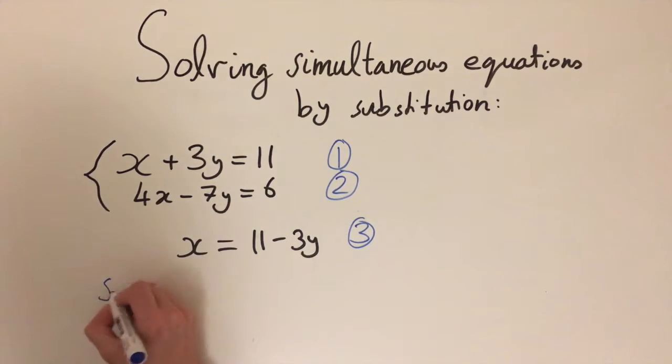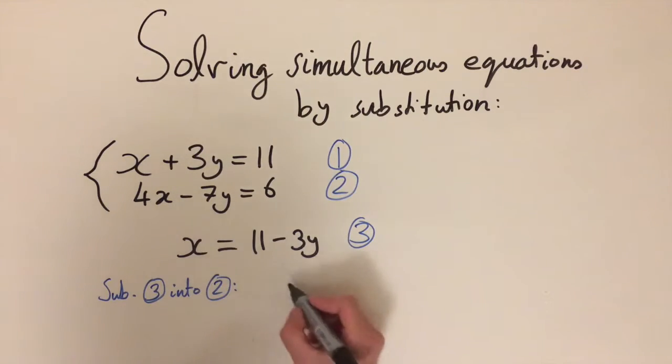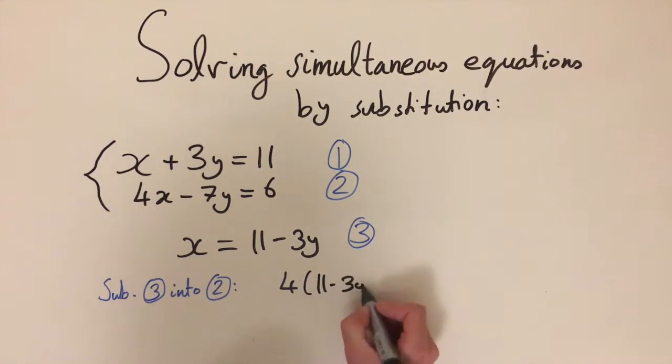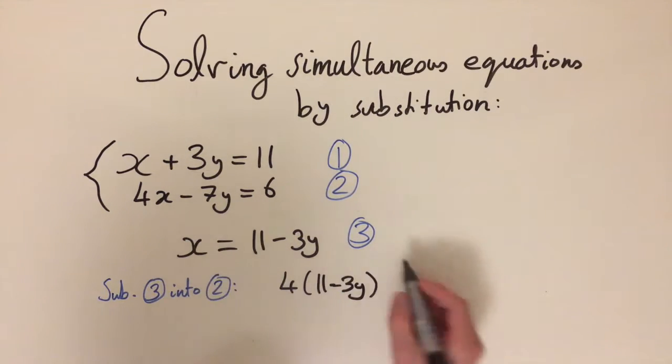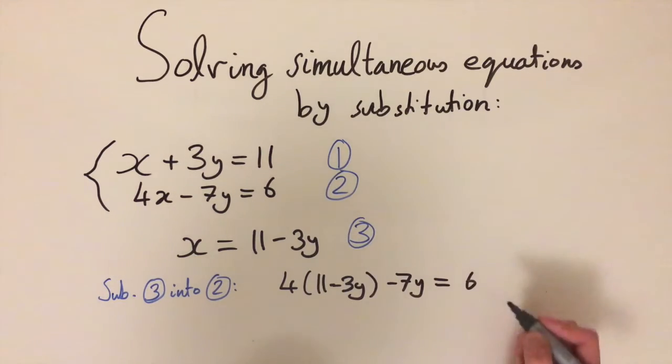Let me write substitute 3 into 2. If we do this we're going to have 4 times x, and x is now 11 minus 3y, and we still have minus 7y, and this equals 6 from equation 2.